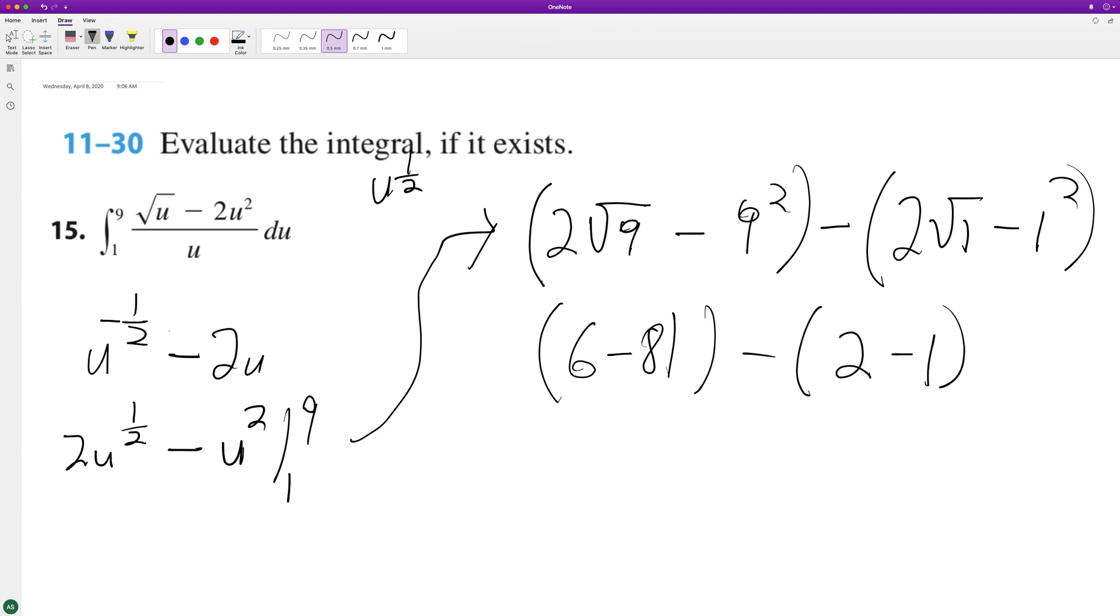That's 6 minus 81 which is minus 75, and this becomes minus 1, so we end up with negative 76.